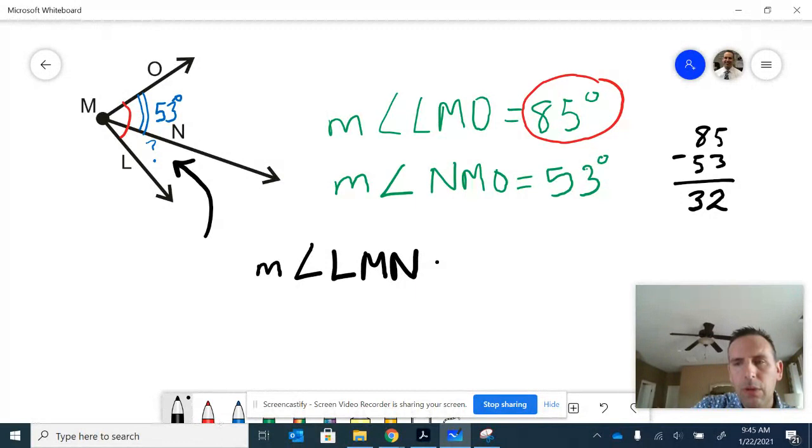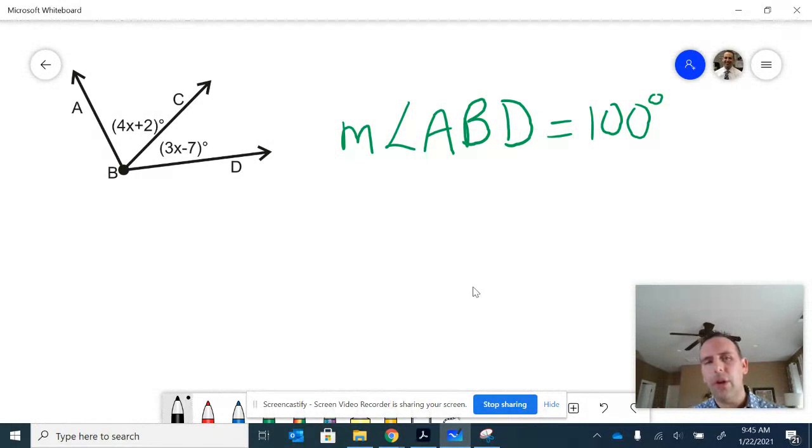One last example, an algebraic connection. In this diagram we have two interior angles, or two smaller adjacent angles, labeled algebraically. One of them is 4x plus 2 degrees, the other one 3x minus 7 degrees. Notice that the information I have at the right is the measure of angle ABD. That's this largest angle here, all the way from one outside side to the other, which is 100 degrees.